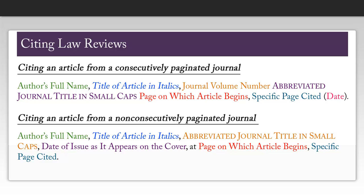A consecutively paginated journal would be one where the first issue published in a year would start on page 1 and go through, let's say, page 300. Then the second issue published that year would start on page 301. For a non-consecutively paginated journal, each new issue will start on page 1.